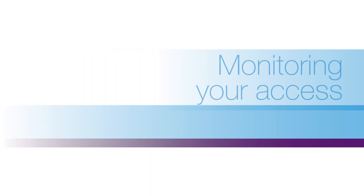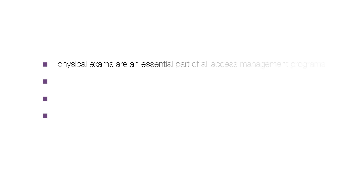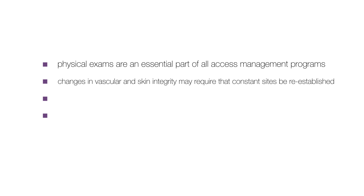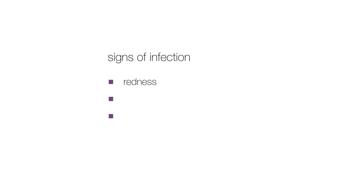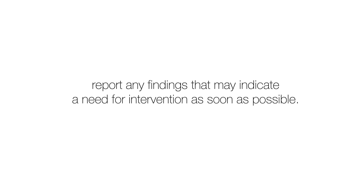Monitoring your access: An important part of access management is to continually monitor your access to make sure that it is healthy and functional. Physical exams are an essential part of all access management programs and are particularly important with constant site cannulation. Changes in vascular and skin integrity may require that constant sites be re-established. By performing routine physical exams, problems should be detected early. Assess for thrill and pulse, note any bruising, and evaluate for the development of accessory veins. Document your findings. It is very important to look for signs of infection — redness, drainage from the buttonhole site, and access feeling warmer to touch. The patient may or may not have a fever. Signs of infection should be reported immediately.